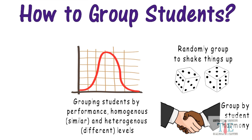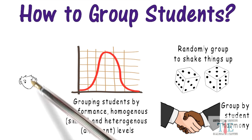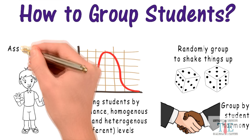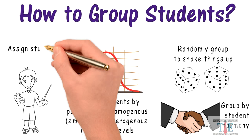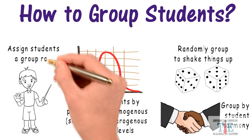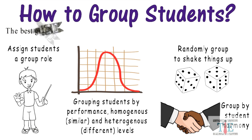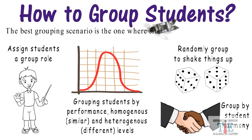Random grouping is sometimes used when teachers are looking to shake things up. When students are grouped together, things can get out of control pretty quickly. To keep order, assign students specific roles within the group, therefore assigning responsibilities to its members. Always remember, the best grouping scenario is one where students are both safe and learning.